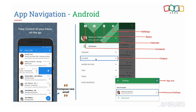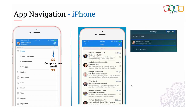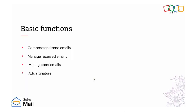From here you can choose to visit the folder you wish to attend. On the top right, you have a switch to sign out from just one device. In the mobile app, you can add multiple accounts. On the top right side, you will have a Compose section. Clicking on that, you can compose and send your mail. Basic functions include compose and send mails, managing received emails, managing sent emails, and adding a signature.